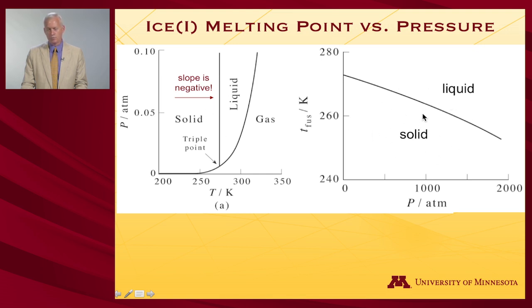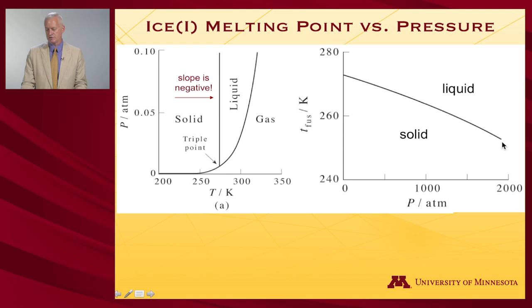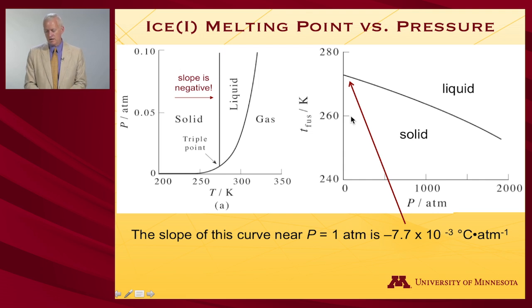Here again, the negative slope — expressed more directly: what is the temperature of fusion, that is the melting point, of water as a function of pressure, covering a much larger pressure range? Down near one atmosphere, we have our usual 273 Kelvin. But if we ramp up to a thousand atmospheres, two thousand atmospheres, that melting point drops to a little below 260 Kelvin. The slope of the curve near one atmosphere is minus 7.7 times 10 to the minus 3 degrees Celsius per atmosphere — but it is negative.